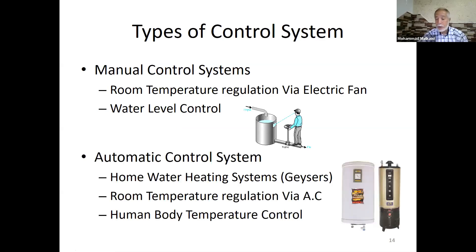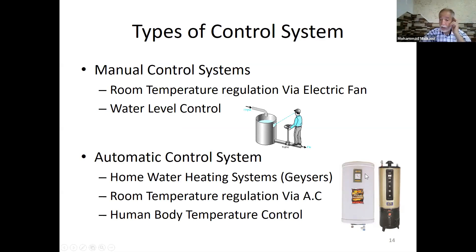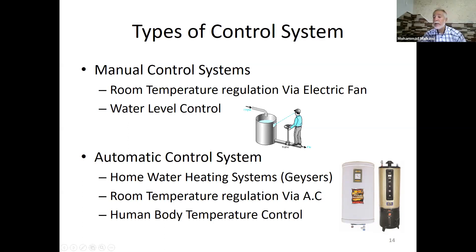Automatic control systems do all this using electrical modulators, valves, or actuators automatically. A home water heating system — like a geyser or furnace — keeps checking the temperature; if it drops below a certain level, it allows gas in and heats the water. Air conditioning is the same: you set parameters like fan speed and target temperature at 75 degrees, leave, and when you return the room is at that temperature. Human body temperature control is automatic but natural.